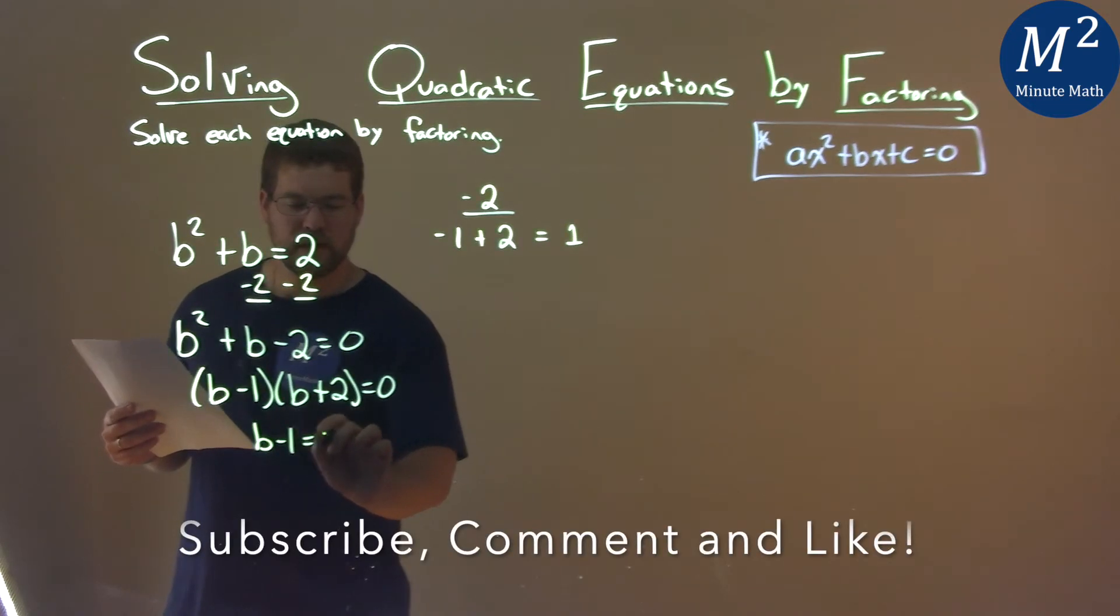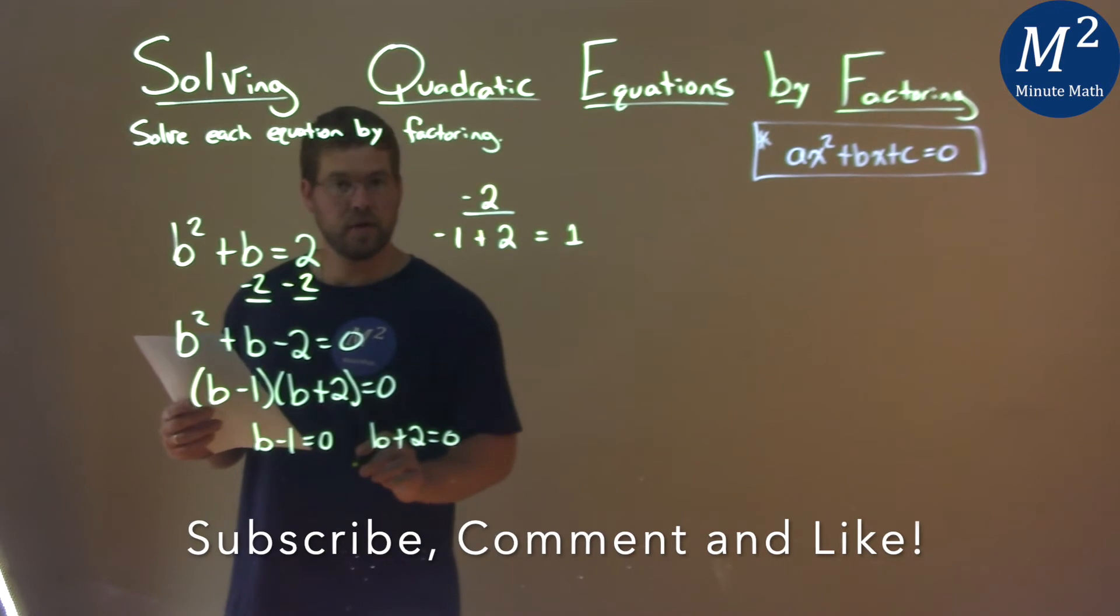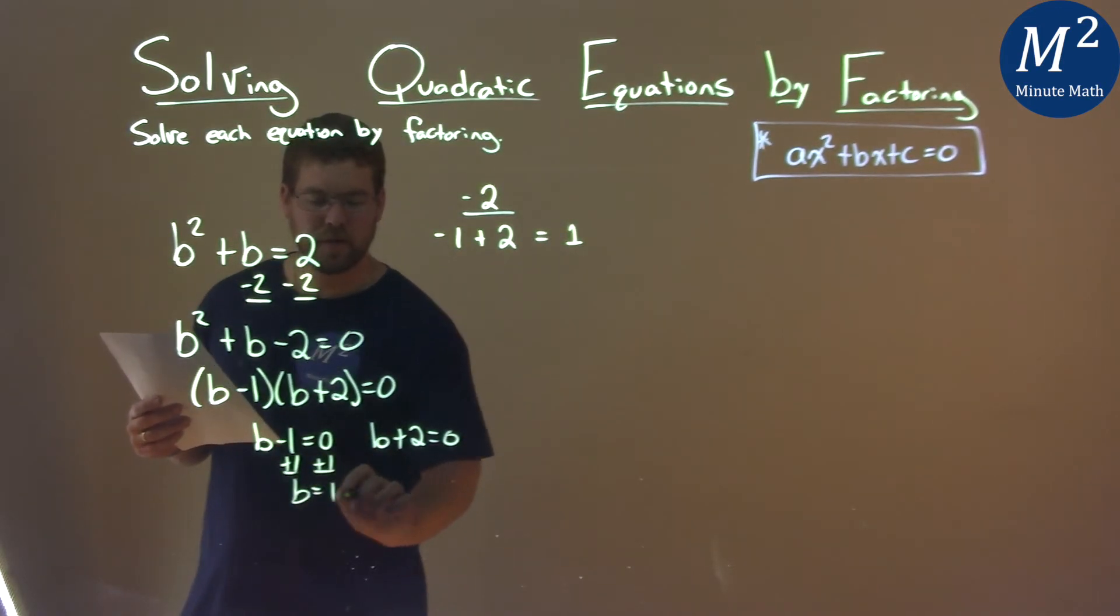So I take b minus 1, set it equal to 0, and b plus 2 equal to 0, and let's solve. Add 1 to both sides, and b equals a positive 1.